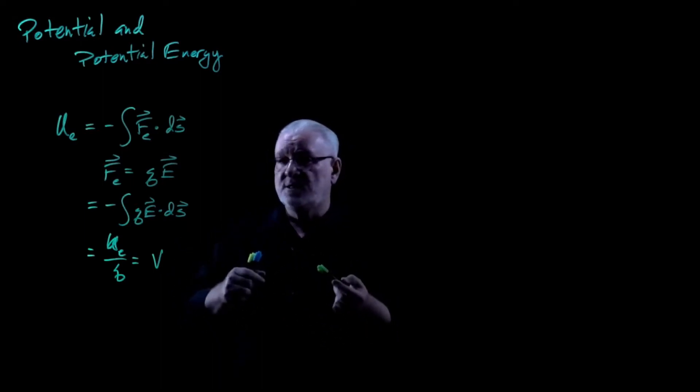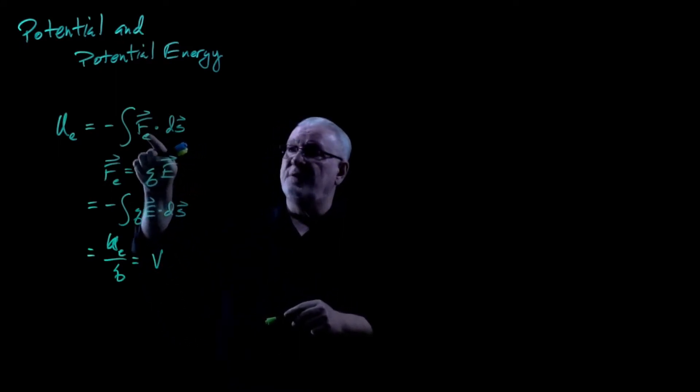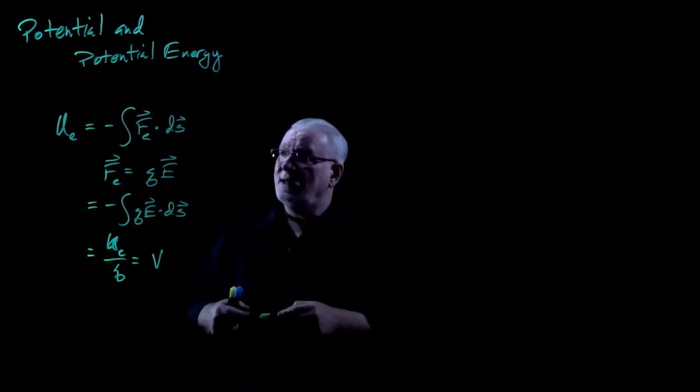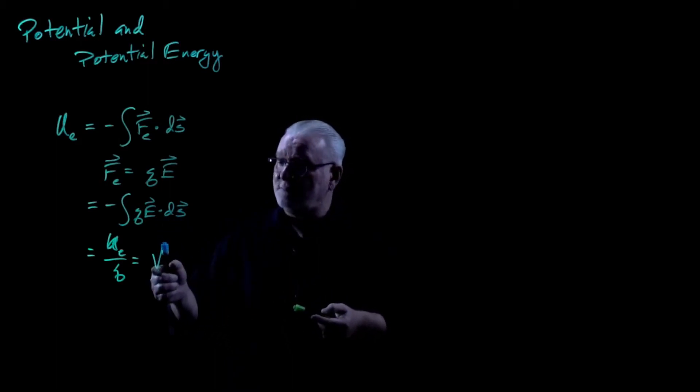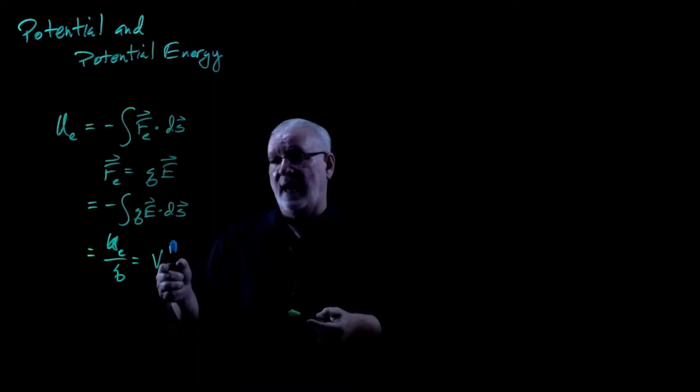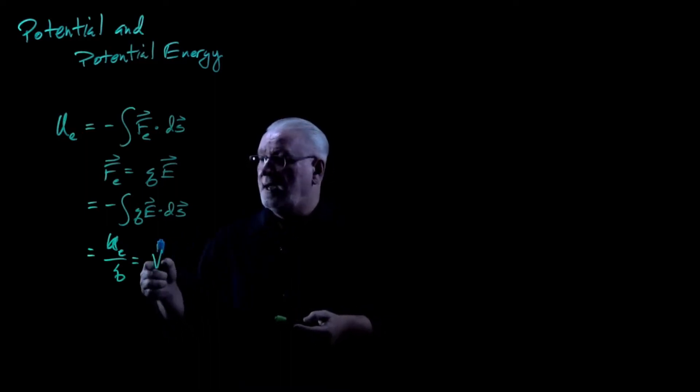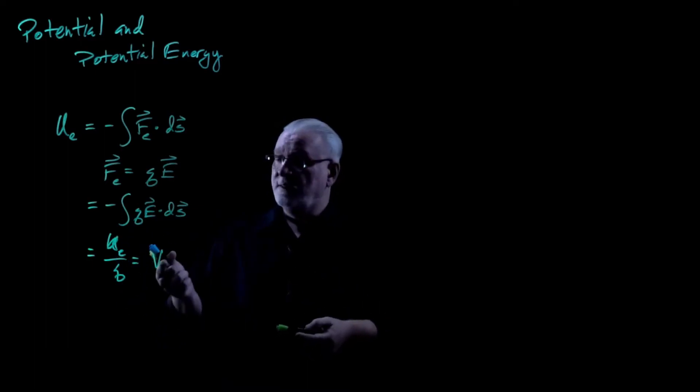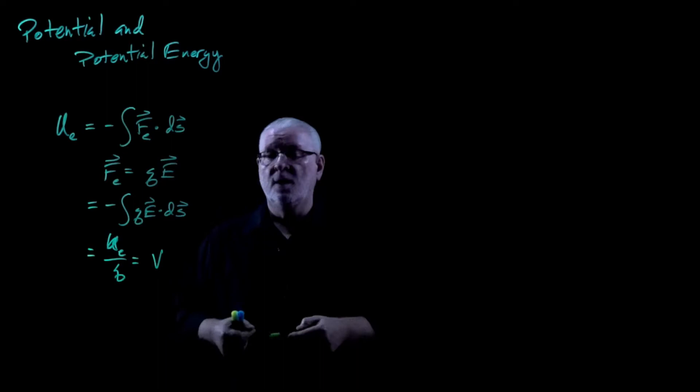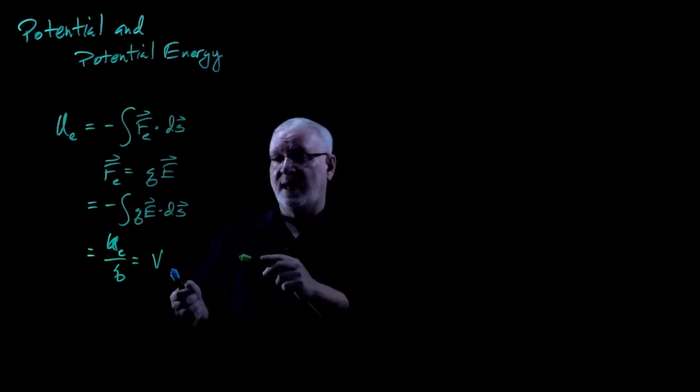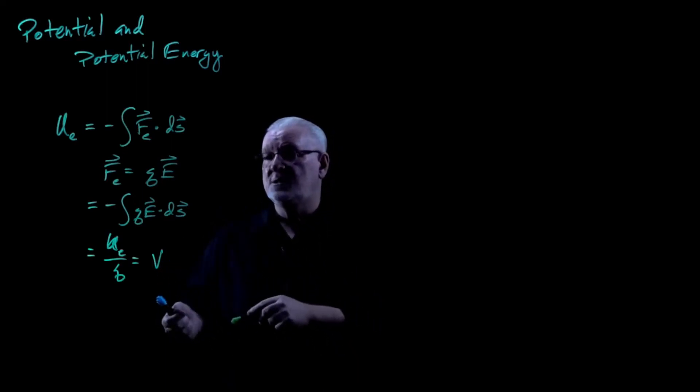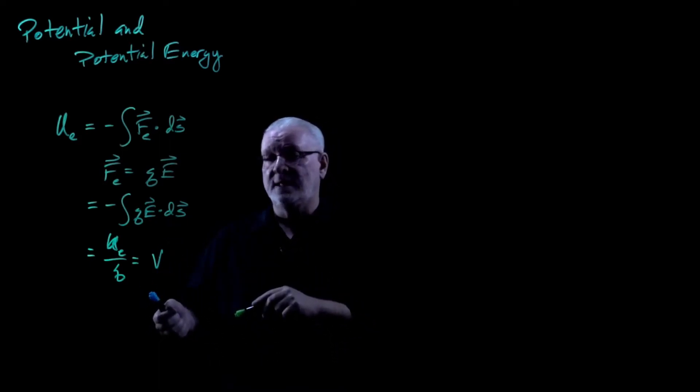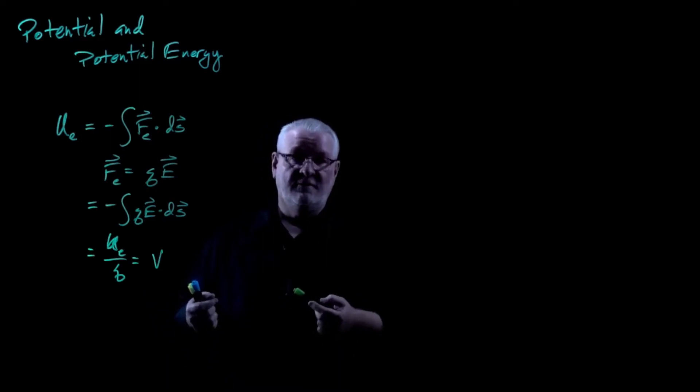We can have positive changes in potential energy and negative, but that's all a function of whether the dot product returns a negative or positive. It has nothing to do with direction. And because the potential, listed as variable V, is just a function of the potential energy divided by Q, another scalar, the potential is also a scalar quantity. It is possible to have positive and negative changes in potential, but those positive and negative changes do not in any way represent vector quantities that have direction.